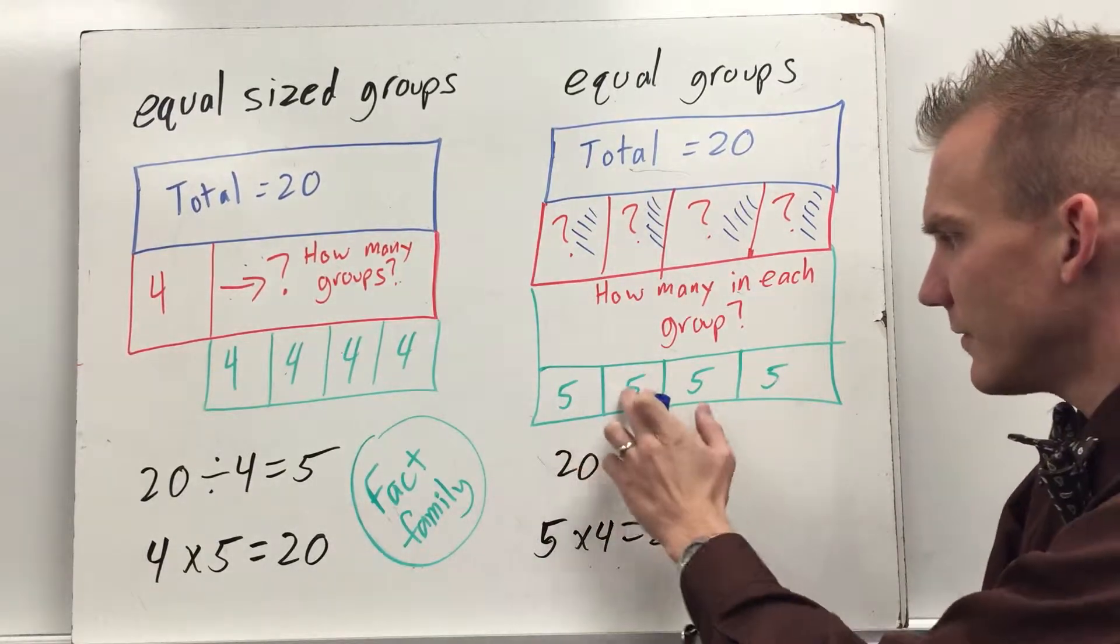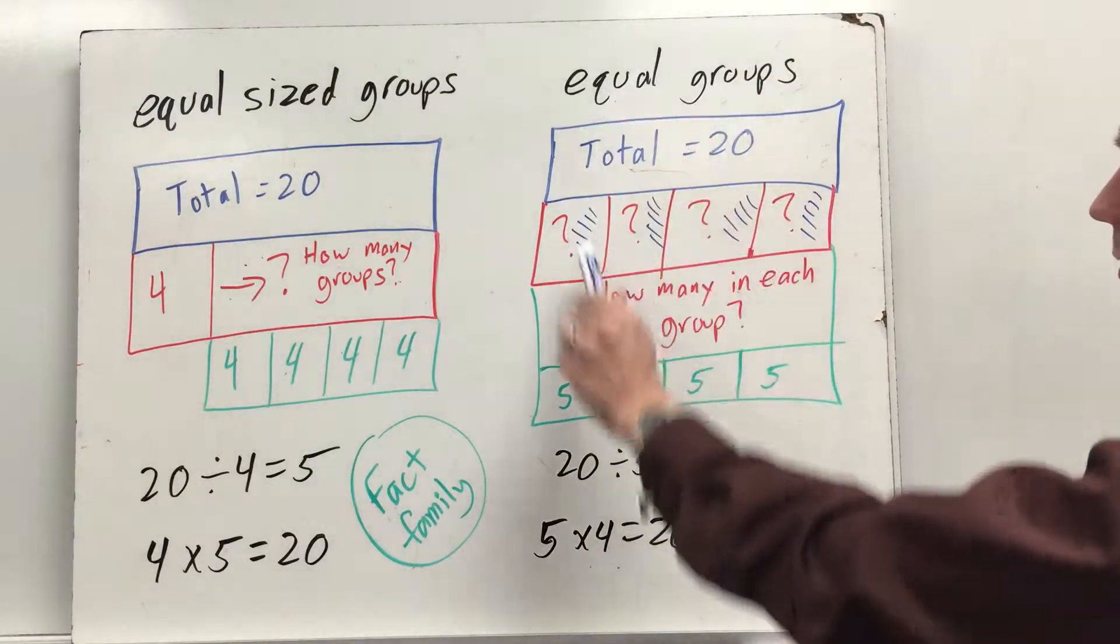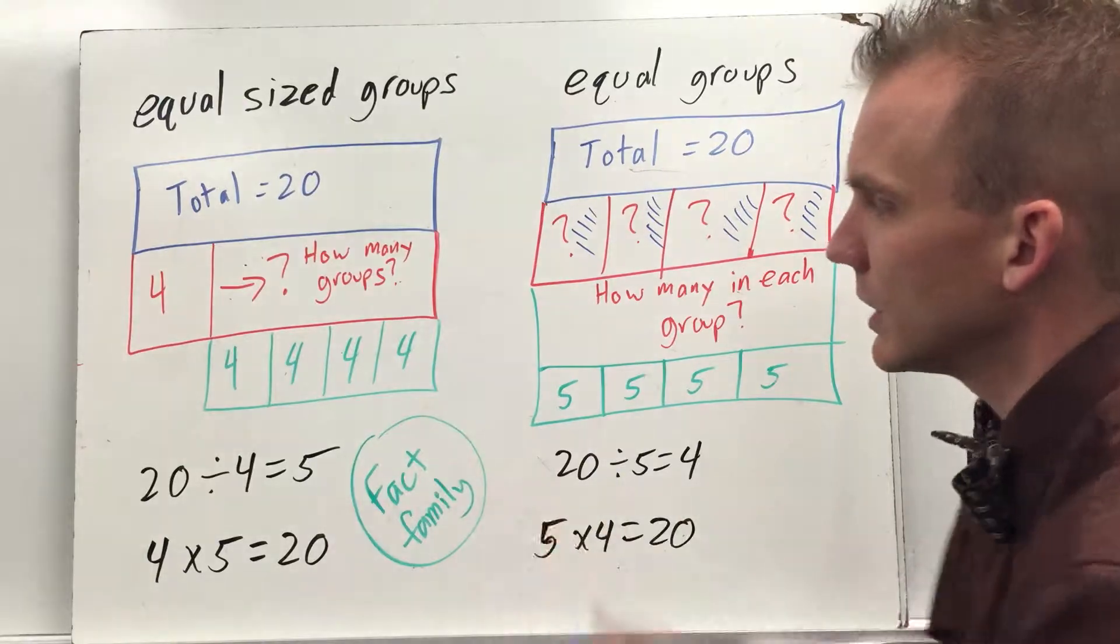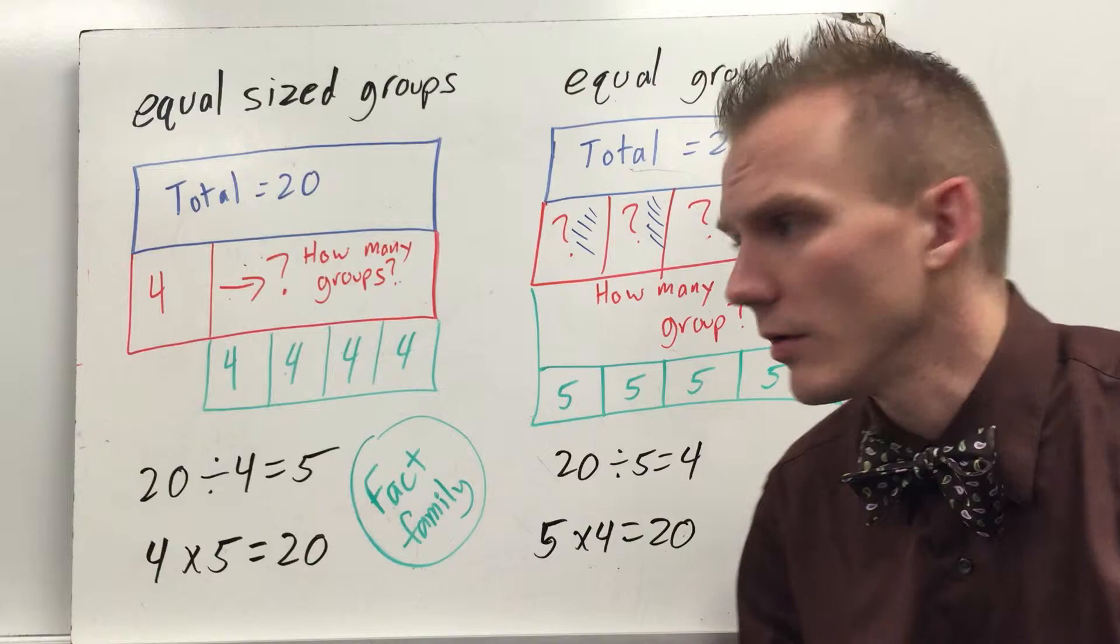So there's 5 in each group. 5, 5, 5, 5. That's 5, 10, 15, 20. So that's another way to look at it in terms of how many in each group or how many groups. And a lot of that depends on how the problem you're looking at is worded. What are you trying to solve?